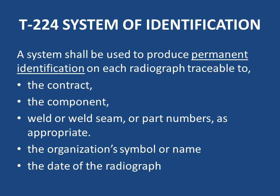T-224: System of Identification. A system shall be used to produce permanent identification on each radiograph traceable to: the contract, the component, weld or weld seam or part numbers as appropriate, the organization's symbol or name, and the date of the radiograph. In practice, 'contract' means the work order number or naming convention agreed between client and contractor. This avoids confusion when the same contractor or radiography agency is working on different contracts.